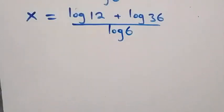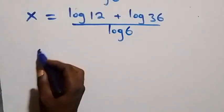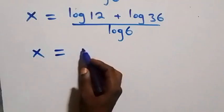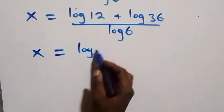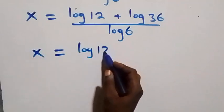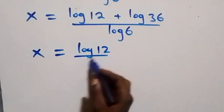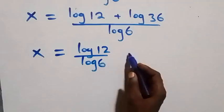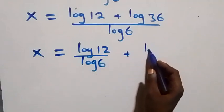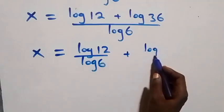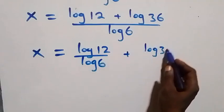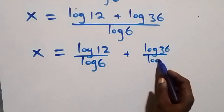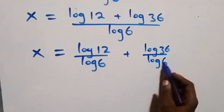We separate this into two fractions: x equals log 12 over log 6, plus log 36 over log 6.